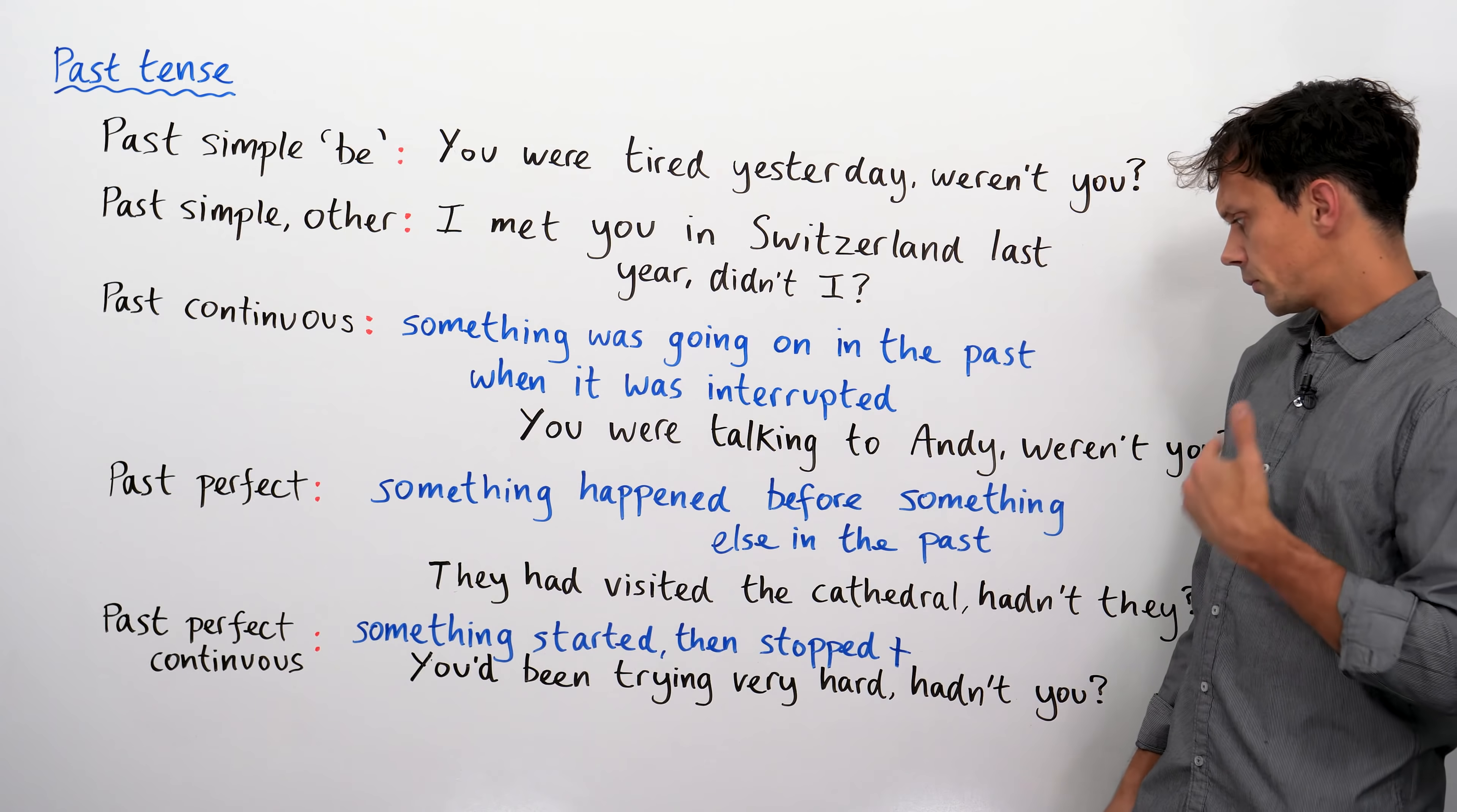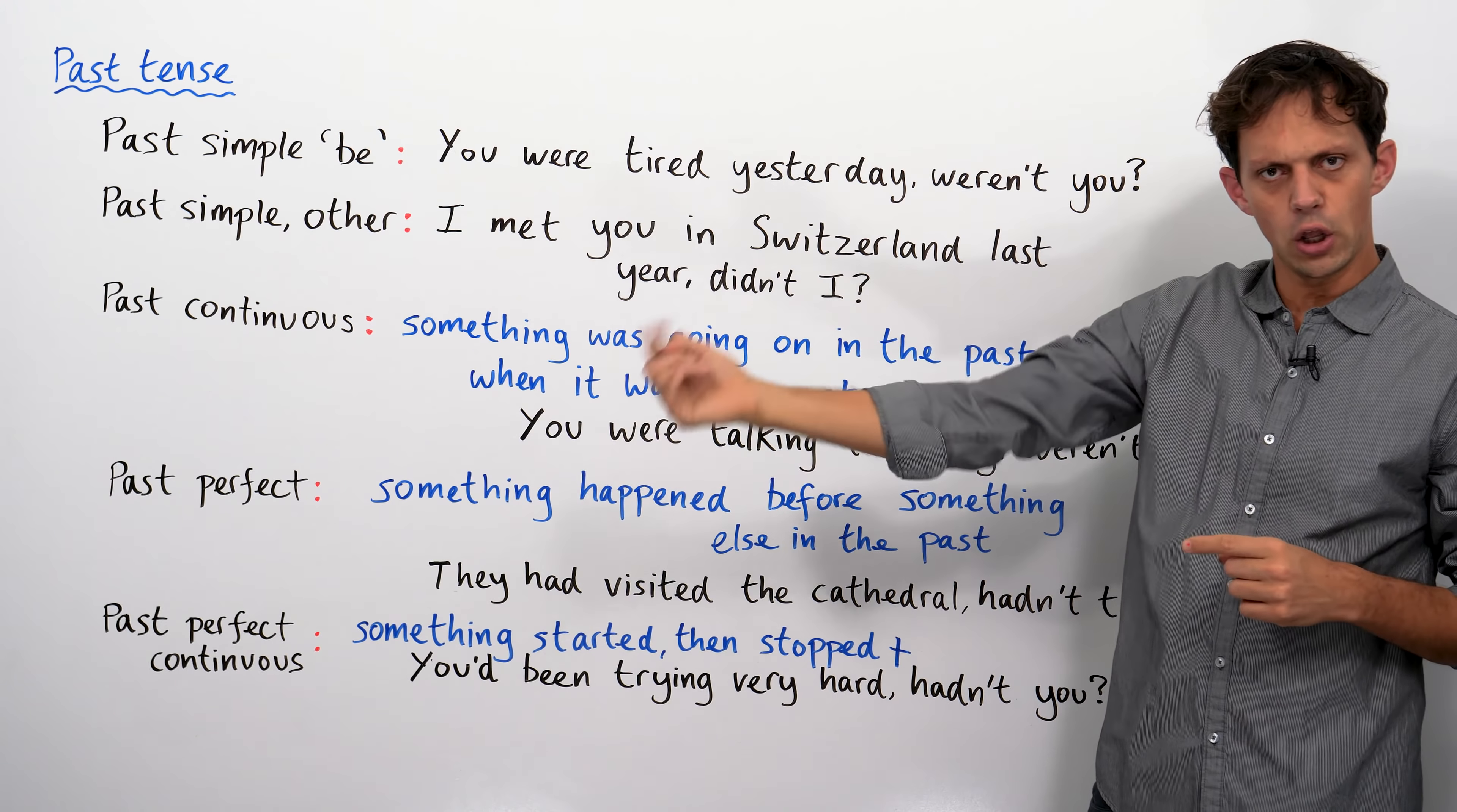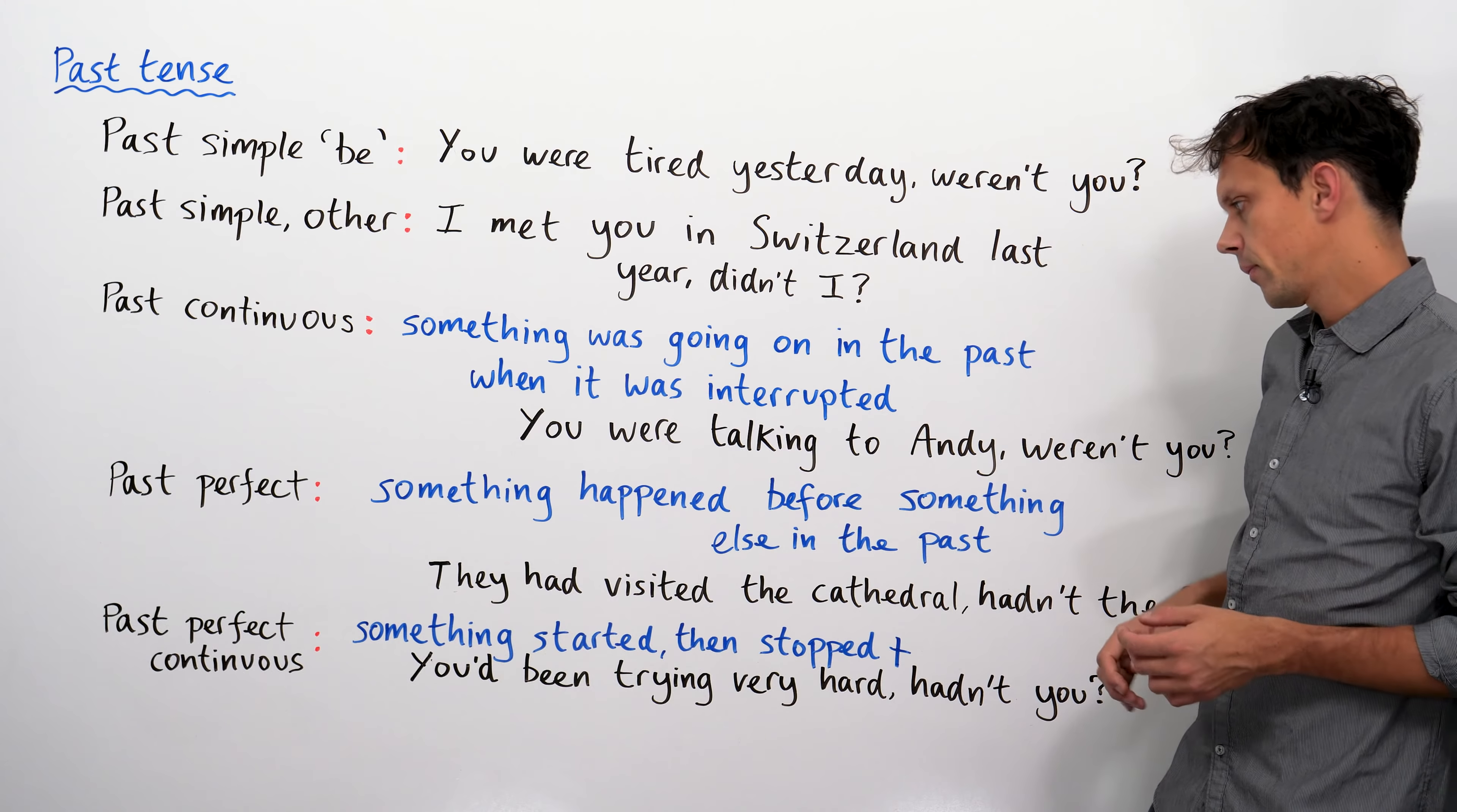The past perfect. Now, we use the past perfect when we are talking about something that happened before something else in the past. So, we're in the past, we've got this thing happened first, and then this thing, we're looking at the thing that happened first. They'd visited the cathedral, hadn't they? First thing, visiting cathedral. Second thing, having some lunch. We're trying to remember, because it's a long way back in the past. They'd visited the cathedral, hadn't they? I'd bought a lollipop, hadn't I? They'd driven to Norwich, hadn't they?